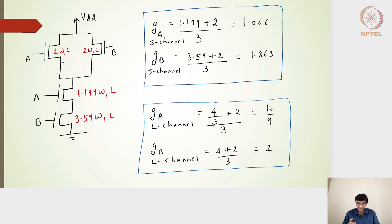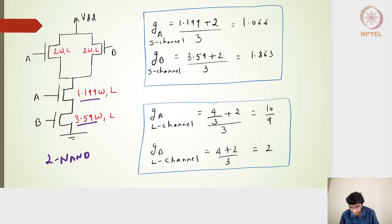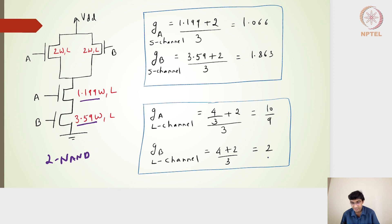For a two-input NAND gate with PMOS = 2W, NMOS = 1.199W, and the series transistor = 3.59W, the logical effort of input A is (1.199 + 2) / 3 = 1.066, and the logical effort of input B is (3.59 + 2) / 3 = 1.863. In the long channel model, input A gives 10/9 and input B gives (4 + 2)/3 = 2.